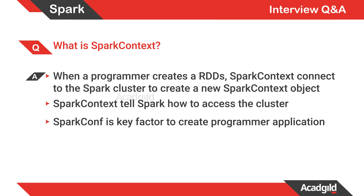Inside Spark Context you can configure your Spark properties with the help of Spark Configuration. Spark Configuration is a key factor in creating a programmer application. Whenever you are creating an application, you set different properties like local or master, application name, and all sorts of things configured inside Spark Configuration.